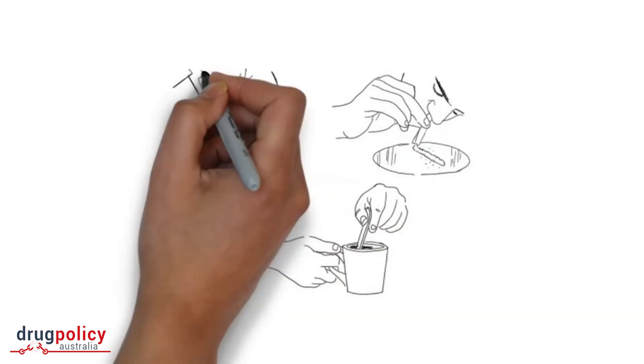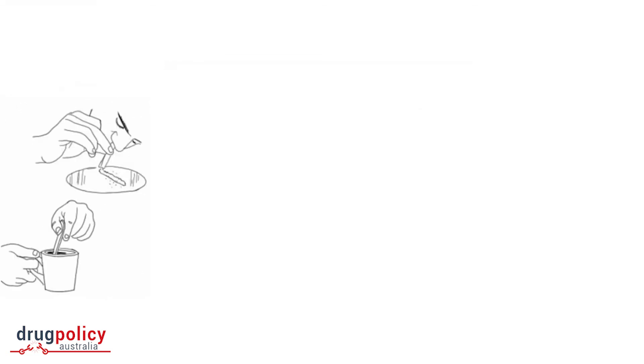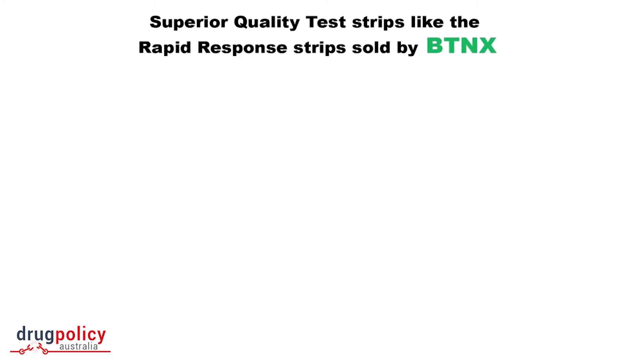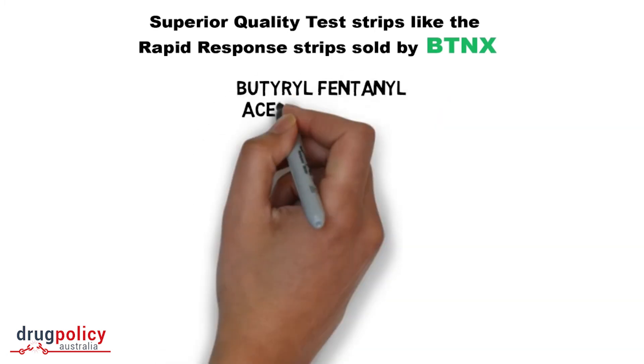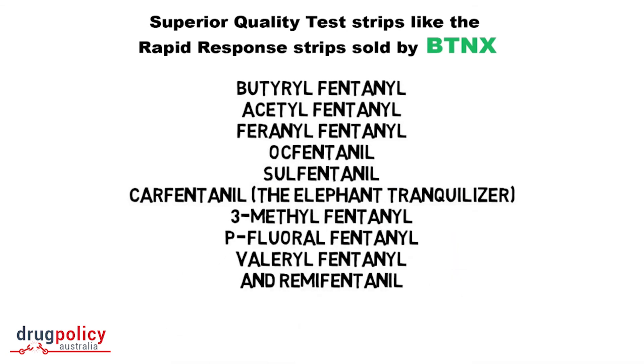A negative test doesn't mean there isn't fentanyl in your drugs. There may be one of the analogues that the strips didn't test for. Here's what we know so far. We know that superior quality test strips like the rapid response strip work for many different fentanyl analogues. So once again, go slow because remember, once it's in you, you can't take it out.